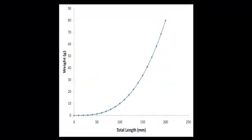Another way that we look at fish growth is the relationship between length and weight — the length-weight regression. As a fish gets longer, of course it also gets heavier, but what you find out is that's a curvilinear relationship. As the fish gets longer, they get heavier faster, and this is actually a power relationship.